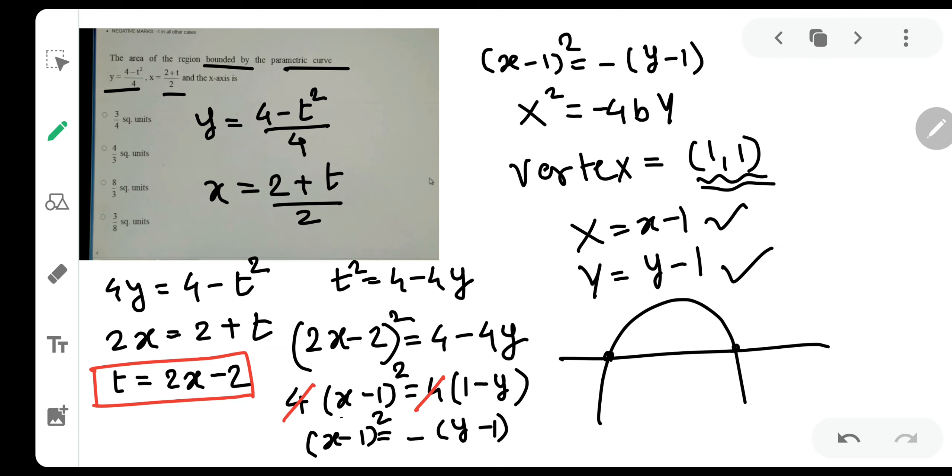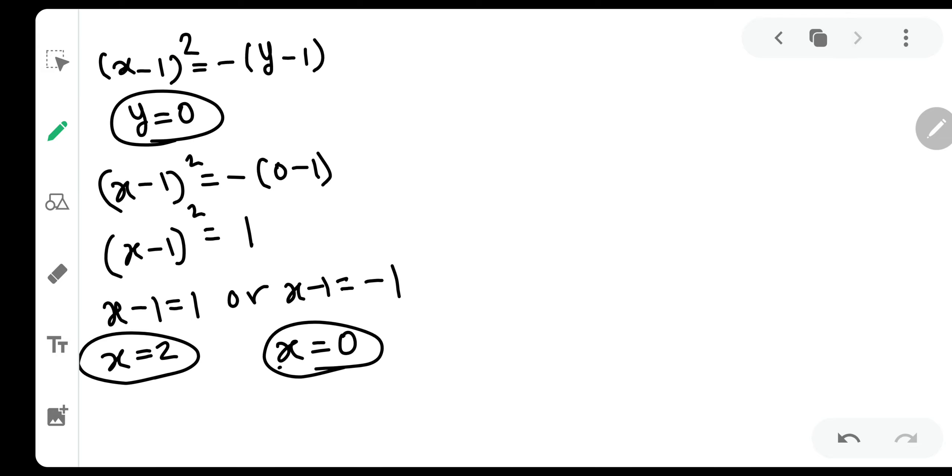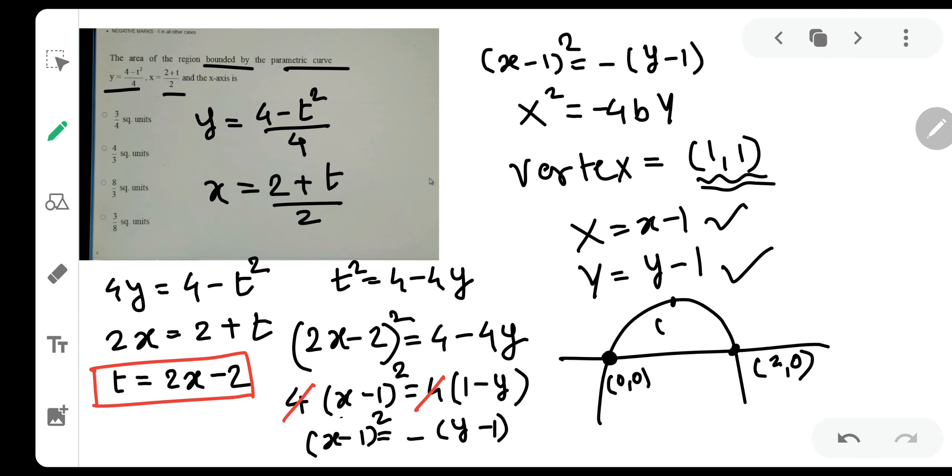It means y is equal to 0 at x equal to 0 which is this point 0, 0 and which is this point 2 comma 0. So very nicely we have understood this graph. The vertex of the graph was 1 comma 1. You should know every single detail so as to draw the graph.